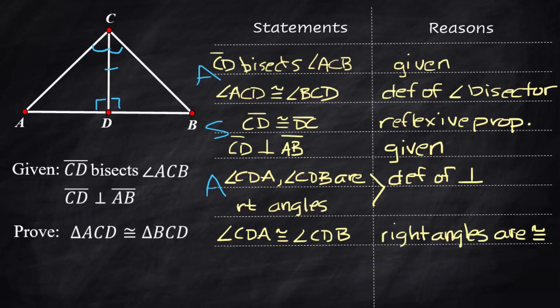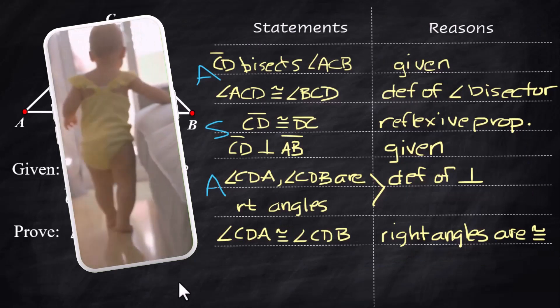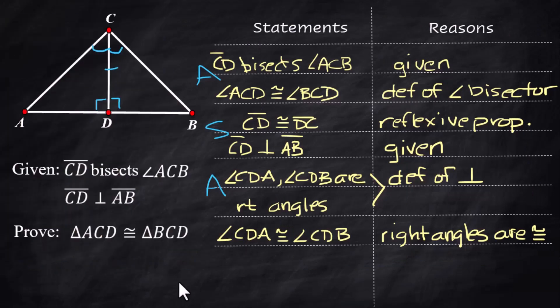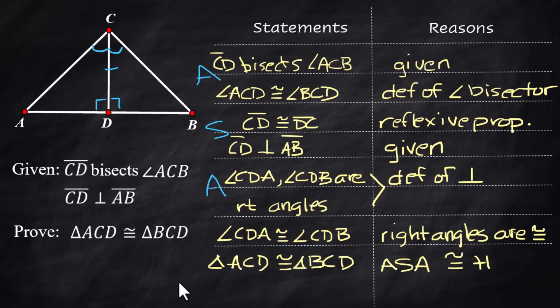I know that seems really logical, and this is one of the reasons why proofs are tough — but you get the hang of it. You're moving in baby steps and building your case to the conclusion: triangle ACD is congruent to triangle BCD by the Angle-Side-Angle congruence theorem.